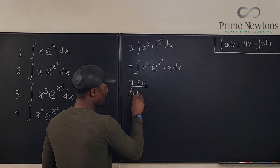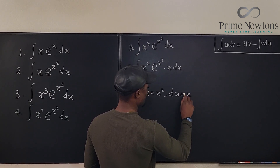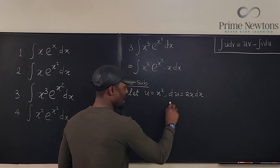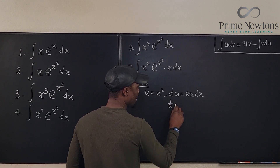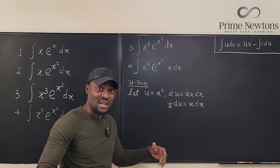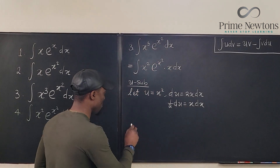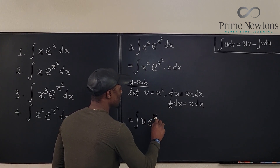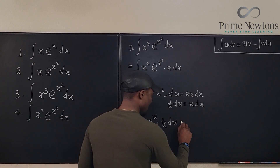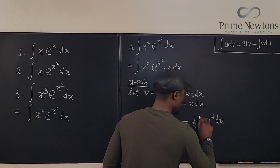Let u = x², so du = 2x dx, meaning one half du = x dx. Substituting in, x² becomes u and x dx becomes one half du. The integral transforms to the integral of u·e^u times one half du, which equals one half times the integral of u·e^u du.